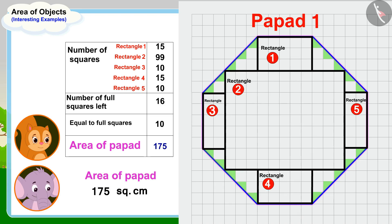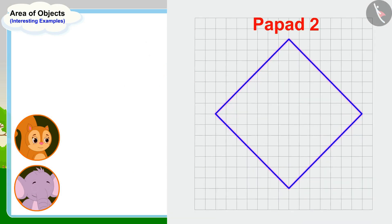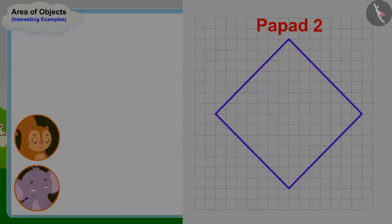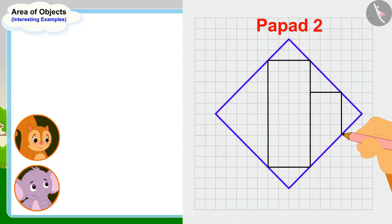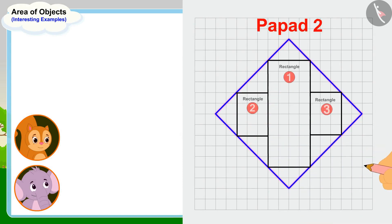Oh wow Appu, this is very easy and fun too. Let me find the area of this popper now, Chanda told Appu. Then Chanda made such rectangles in the area enclosed by the outline of the second popper.